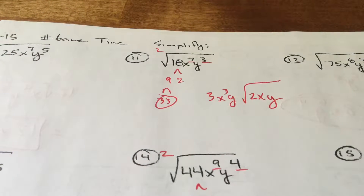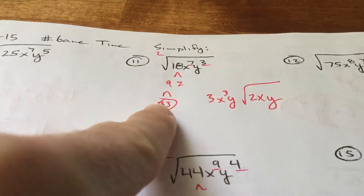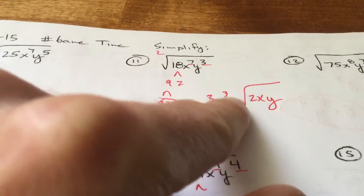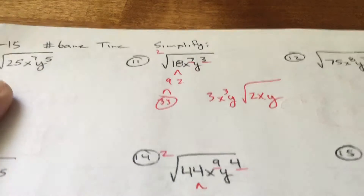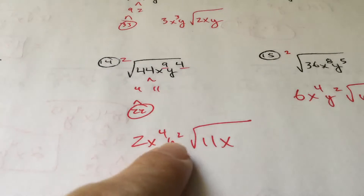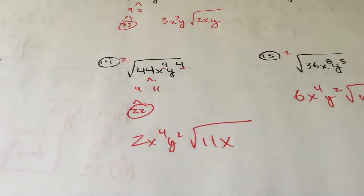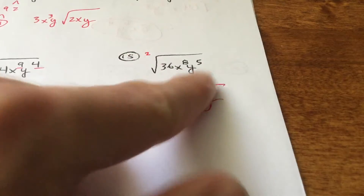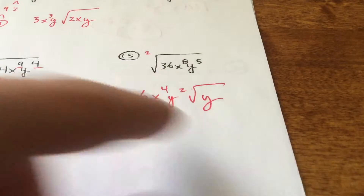That's it for that lesson. Take the square root of 18: a 3 breaks out, 2 stays on the inside. 2 goes into 7 three times with 1 left over; 2 goes into 3 one time with 1 left over. The square root of 44 is 2 root 11. 2 goes into 9 four times with 1 left over. 2 goes into 4 for the y cleanly twice, so no y is left over — the y's break out. Lastly, take the square root of 36, which is 6. 2 goes into 8 four times exactly. 2 goes into 5 twice with 1 left over, so the square root of y is the only thing left.